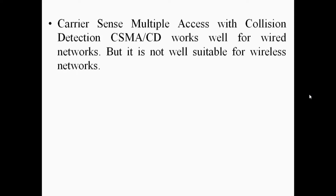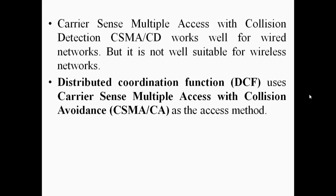Carrier Sense Multiple Access with Collision Detection is working well for wired networks. However, it is noted that Carrier Sense Multiple Access Collision Detection is not well suitable for wireless networks. Hence, Distributed Coordination Function DCF uses Carrier Sense Multiple Access with Collision Avoidance, CSMA/CA, as the access method.